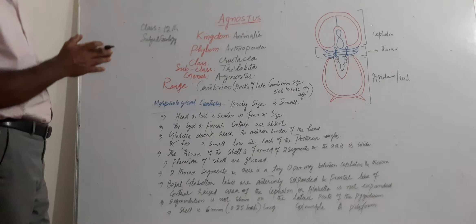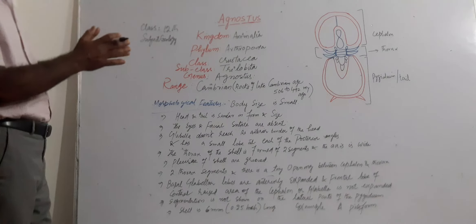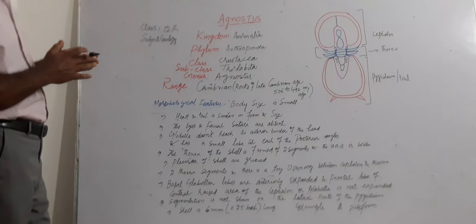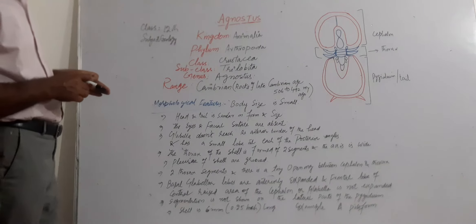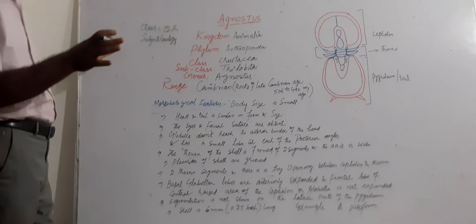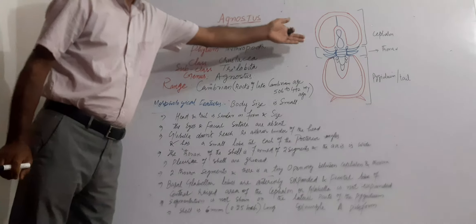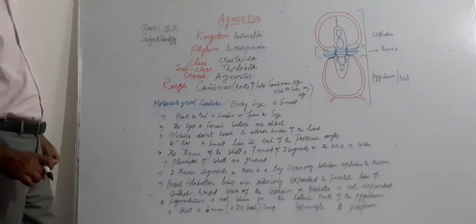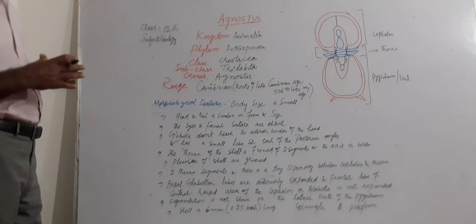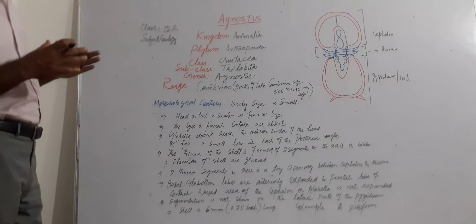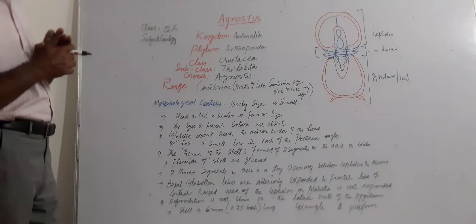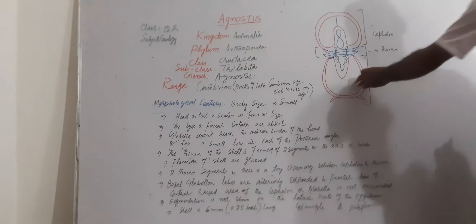Basal glabellar lobes are anteriorly expanded, and frontal lobe of central raised area of the cephalon or glabella is not expanded. Here the lobes are here expanded, but frontal lobe, or we can say the central lobe of cephalon or glabella, is not expanded. Segmentation is also not shown on the later parts of pygidium. Here no segmentation is shown on this tail part or pygidium part shell.